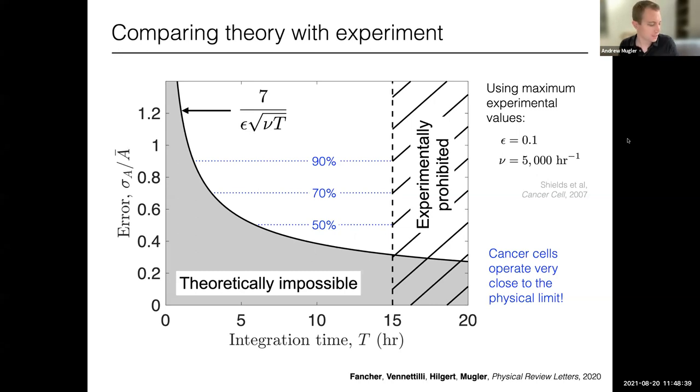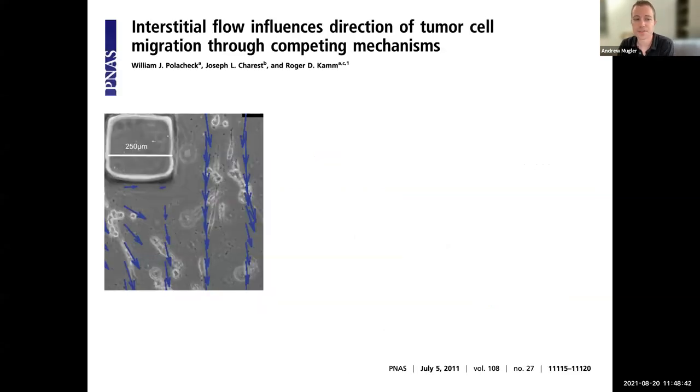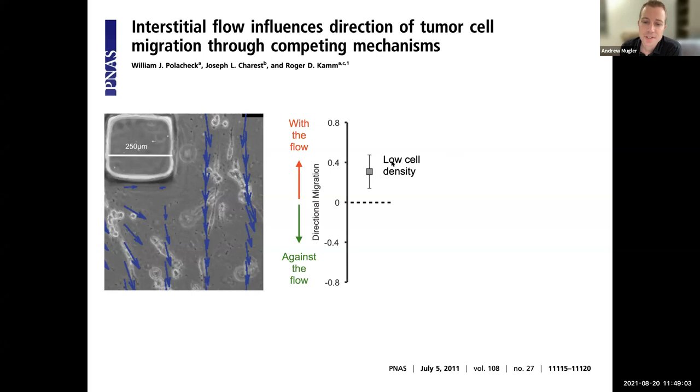So that is actually not the end of the story. It turns out that four years after the paper of Melody Schwartz, there was a study that came out of the group of Roger Cam, where they used a microfluidic device actually and that allowed them to look at this autologous chemotaxis process at varying cell densities, they could seed the device with different densities. And what they saw is indeed if they seeded the device with low cell density, then cells migrated with the flow. And they also showed it was due to autologous chemotaxis that could block the receptors and that didn't happen. But if the cell density was sufficiently high, then something strange happened. The cells actually turned around and migrated against the flow.